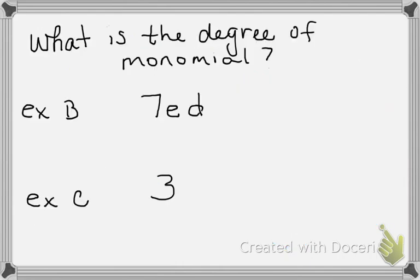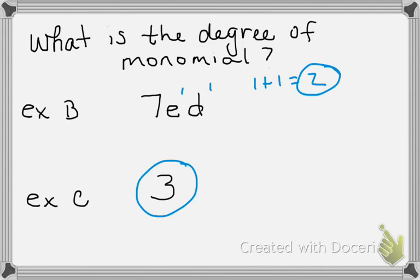Let's try a couple more. What is the degree of monomial? You don't see an exponent on either variable, so you know there's a 1 on each. The 7 is not a variable so you can't count it. So 1 plus 1 is 2 — the degree of monomial is 2. For example C, the answer is 0. Because it's a constant, there's no letter or variable, so there are no exponents to add. The degree of monomial is 0.